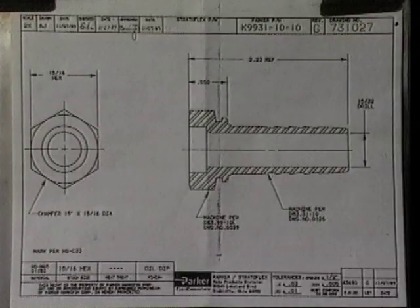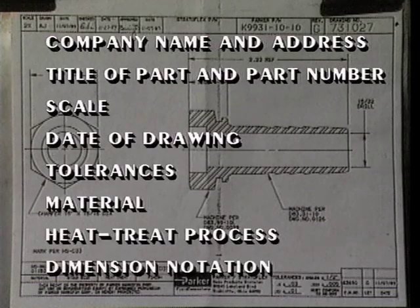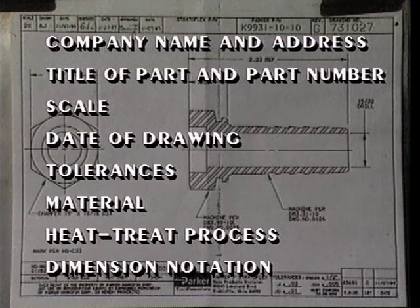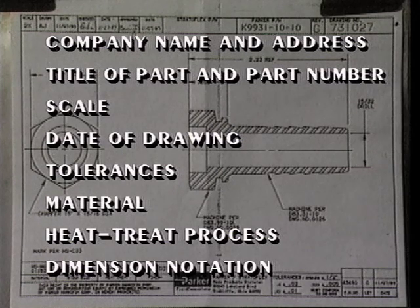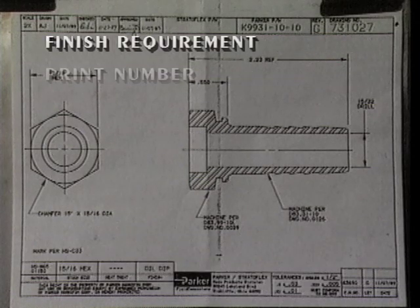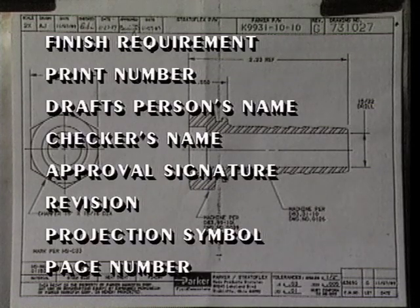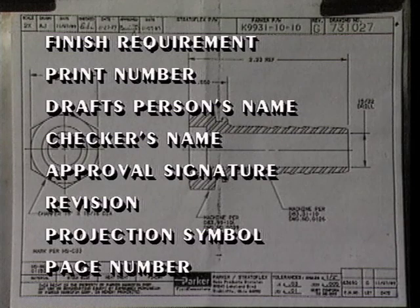You'll usually find the title block at the bottom or lower right of the drawing. The title block tells you the company name and address, title of part and part number, scale, date the drawing was made, tolerancing of all dimensions, material from which the part is made, heat treat process, dimension notation, finish requirement, print number, draftsperson's name, checker's name, approval signature, revision, projection symbol, and page number.